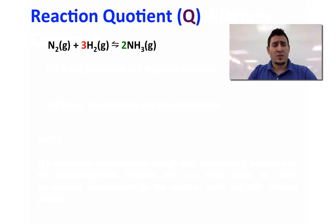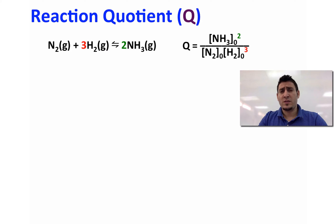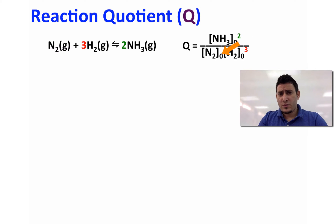Now let's discuss the reaction quotient. The reaction quotient expression is written the same way as the equilibrium constant expression. However, we use the initial concentrations. So the reaction quotient Q for this reaction is written as the initial concentration of NH3 to the power 2, divided by the initial concentration of N2 multiplied by the initial concentration of hydrogen to the power 3.